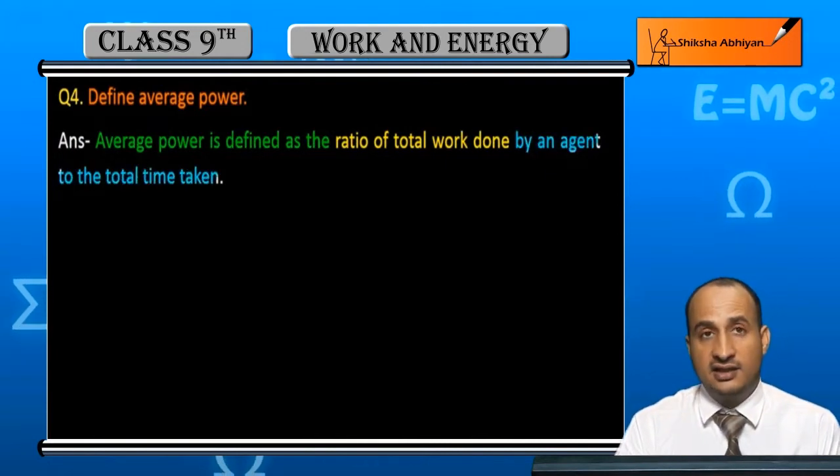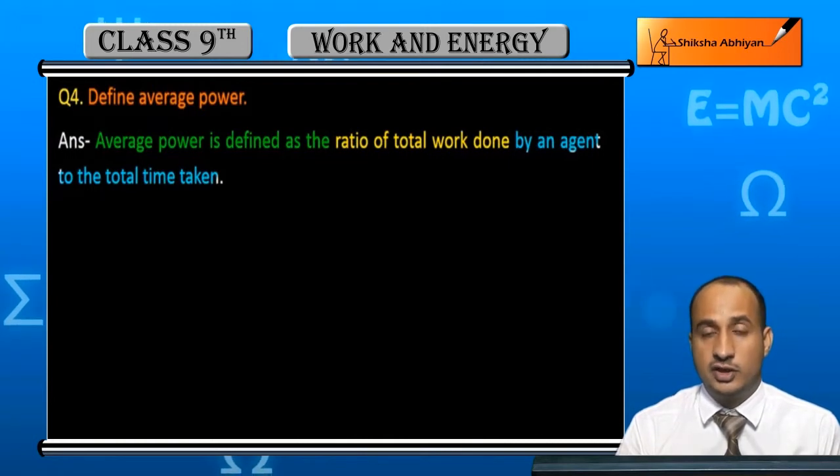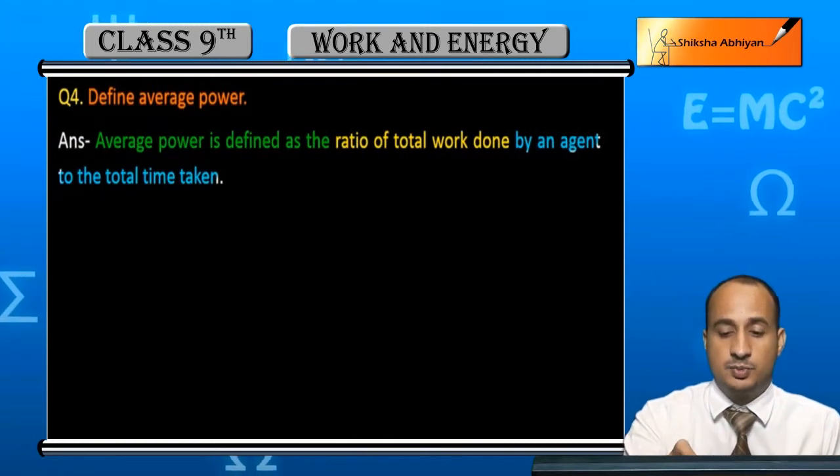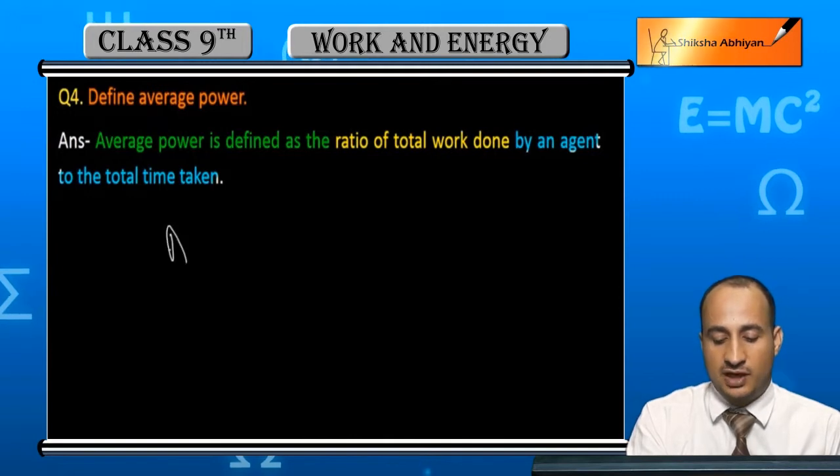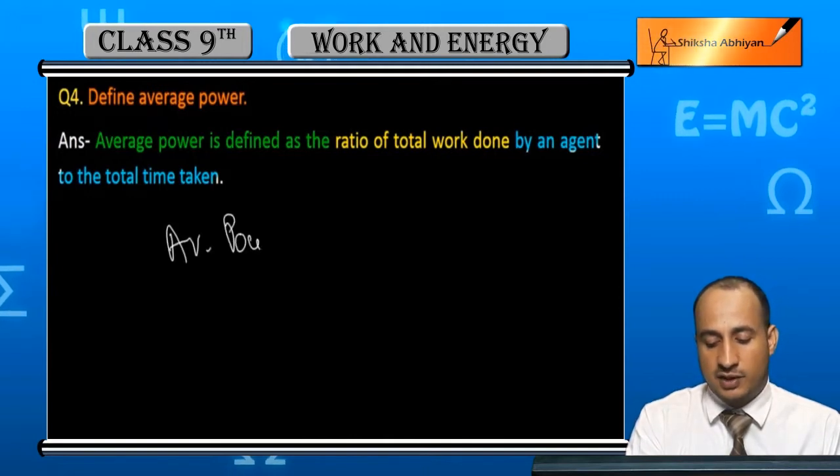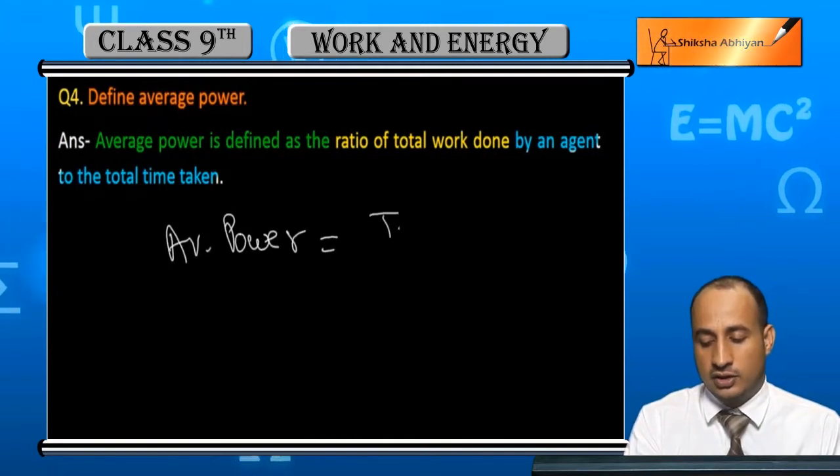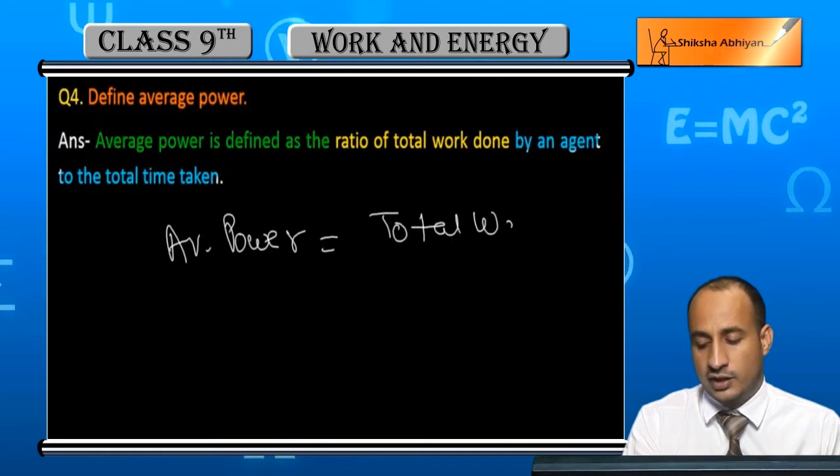Kitna work done aapne kiya, kitne time - yaani total work upon total time, yahi aapki average power hoti hai. Student, average power agar aapko nikalna ho to yeh kitna hota hai? Total work done.